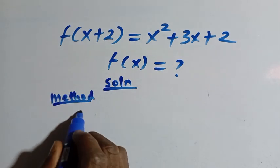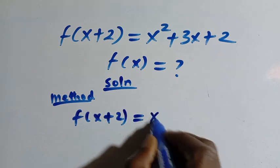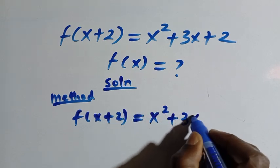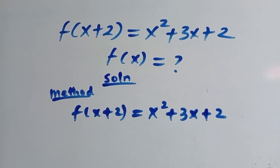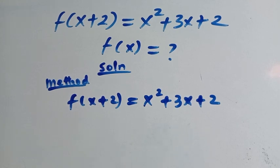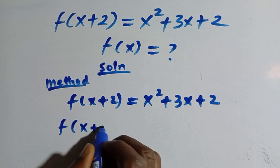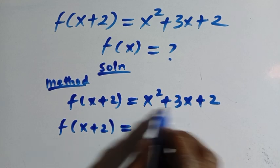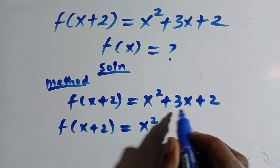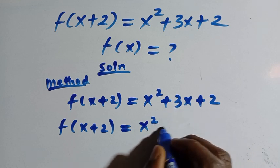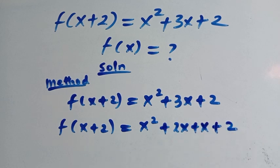So given that f of x plus 2 equals x squared plus 3x plus 2. From the right hand side, which is a quadratic, let's try to factorize that. So here we have f of x plus 2 equals x squared. We look for two numbers whose sum will give us 3 and product will give us 2. So here we have product of 2, addition of 2x plus x, then plus 2.